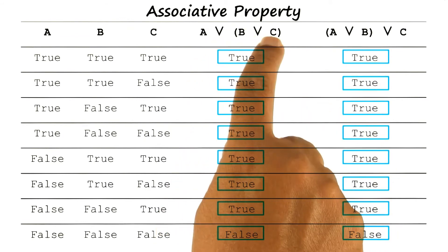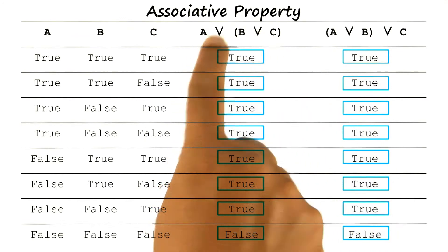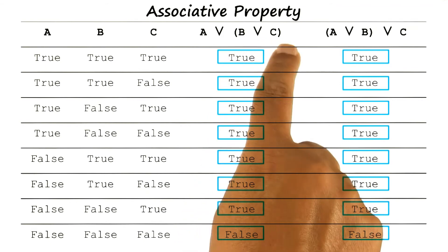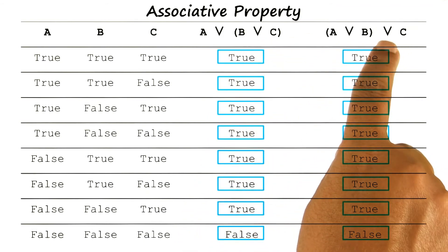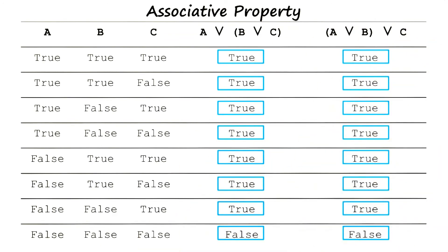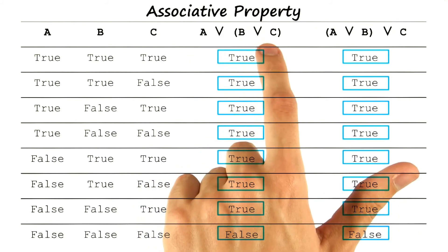The same would have been true if these were both conjunctions. If it was A conjunction (B conjunction C) or (A conjunction B) conjunction C, it would have had the same values. The difference between these formulas and the ones we were doing before are the values of these operators.